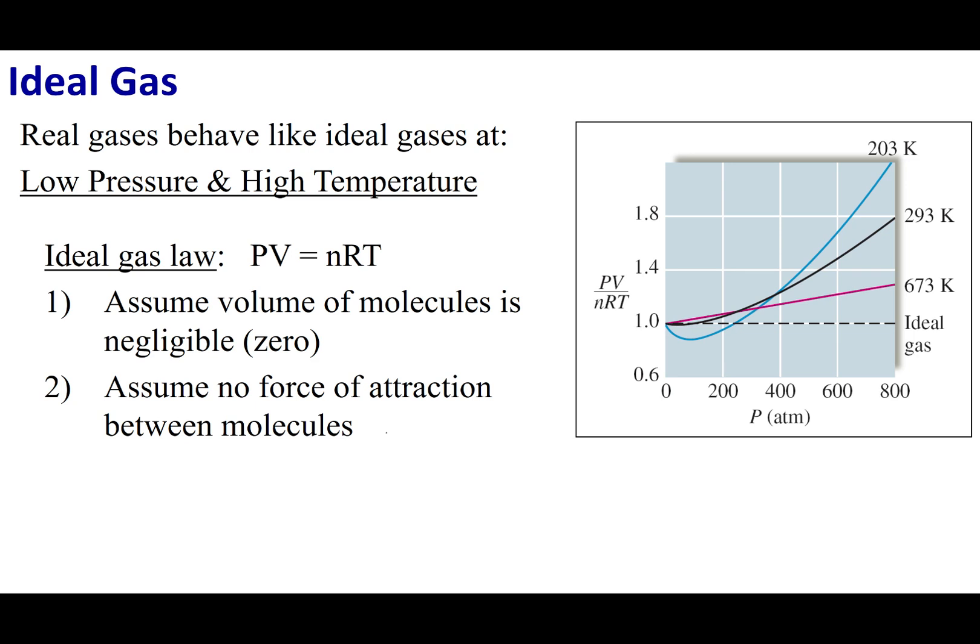So the first thing we're going to do is start out with the formula PV equals nRT. Now what I'm going to do is divide each side by nRT. So what I get is PV over nRT should equal 1, and this is what I'm going to go ahead and graph on this right-hand side.